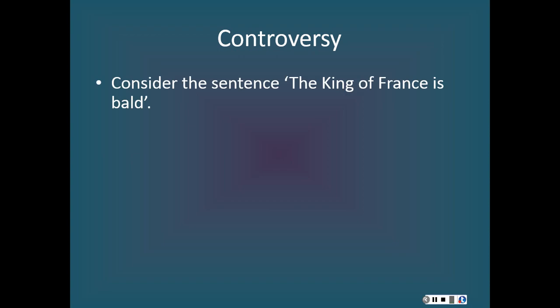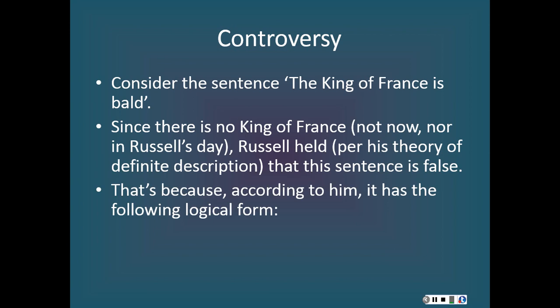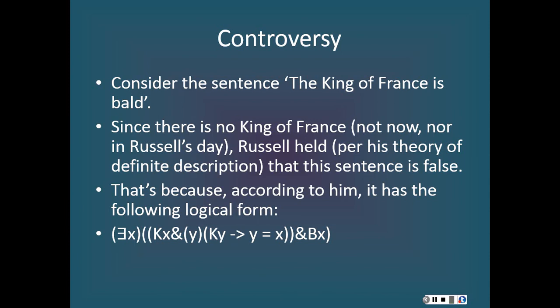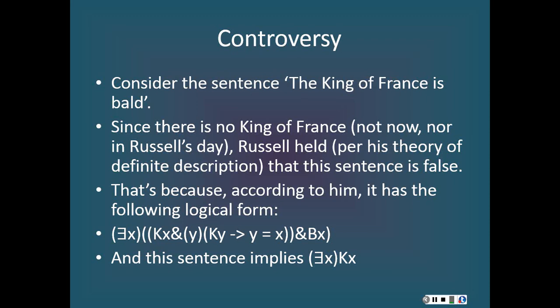Russell's theory is controversial. Consider the sentence: the king of France is bald. Since there is no king of France — there isn't now and there wasn't in Russell's day — Russell held, per his theory of definite description, that this sentence is false. According to him, this sentence has the logical form: there exists an X such that X is the king of France, and for any Y, if Y is the king of France, then Y is identical to X, and X is bald. This implies there exists an X such that X is the king of France. Since there is no king of France, Russell held the sentence was false, and since it is equivalent to 'the king of France is bald,' he held that sentence is false.